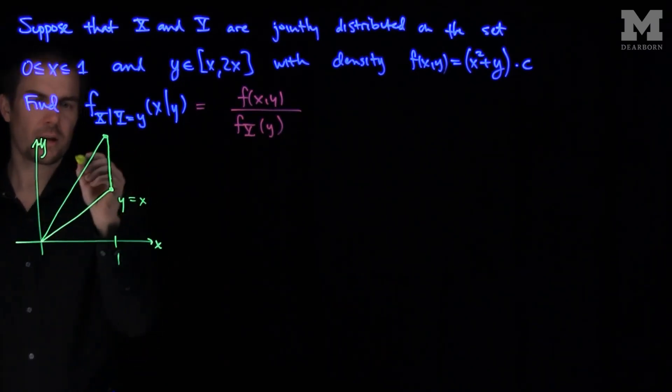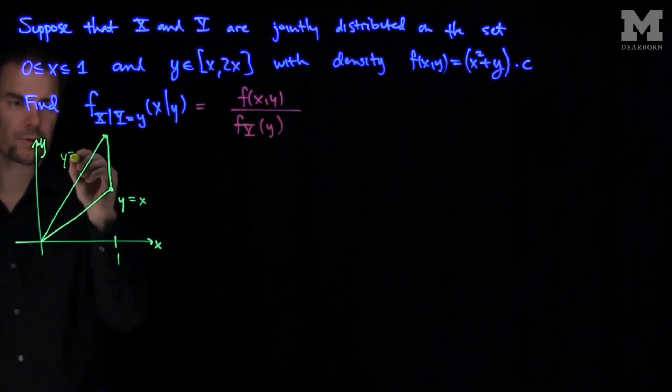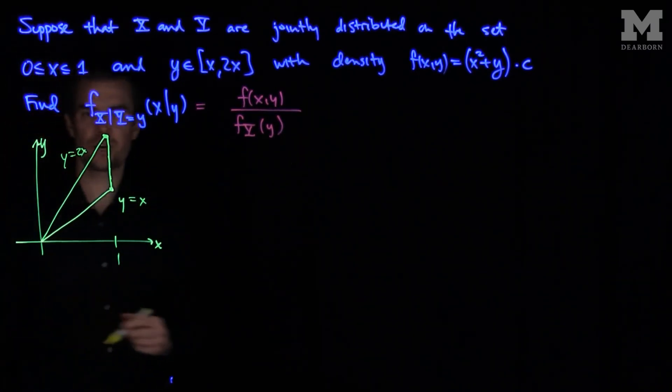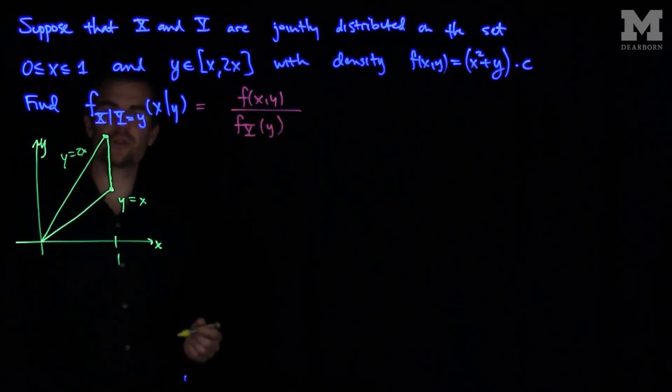So x equals 1 is a vertical boundary, and this is the line y equals 2x. Here is our region of integration — this triangular region.